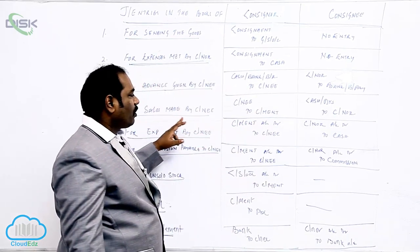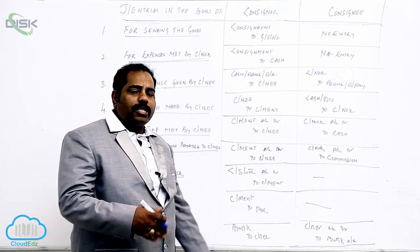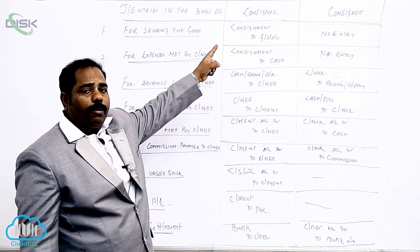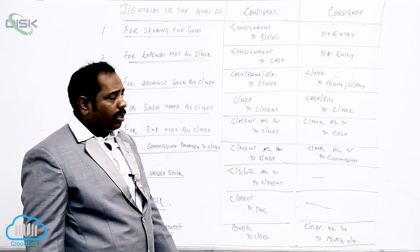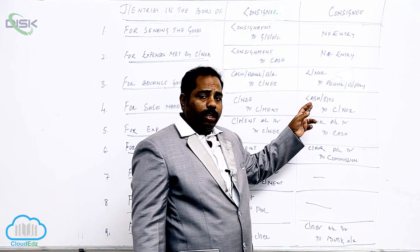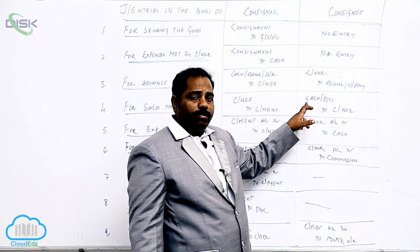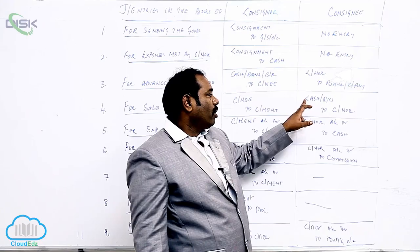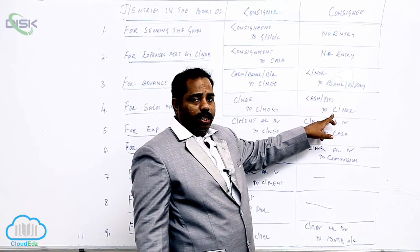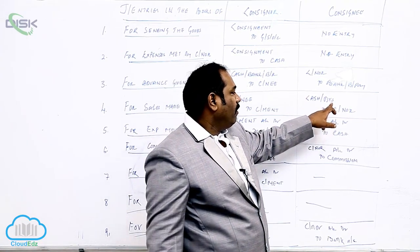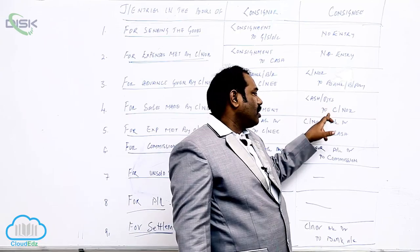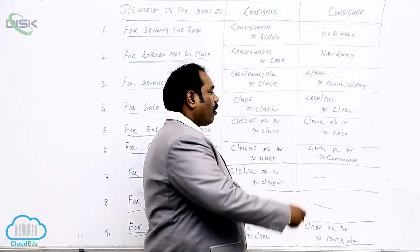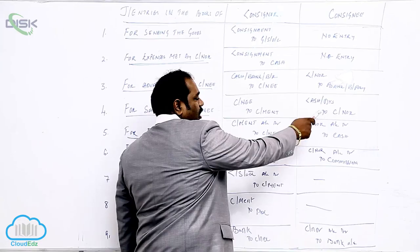Fourth: sales. When the sales is made by the consignee, the entry is consignee Dr. to consignment, in the books of consigner. Whereas in the consignee's books, if he receives cash from the customers, the entry is: cash account Dr. to consigner. If it is on credit, he will write debtors Dr. to consigner, because there are debtors. So debtors account shows debit balance — debtors Dr. to consigner.